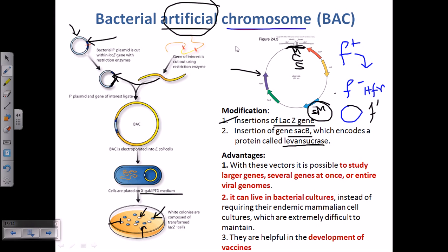By incorporating these intelligent selection technologies directly into the vector, we can screen our desired gene of interest simply by observing phenotypic expression — no need for further downstream molecular biology techniques like gel electrophoresis. The advantages of BACs include the ability to study and clone larger genes, clone several genes at once, and even clone entire viral genomes.